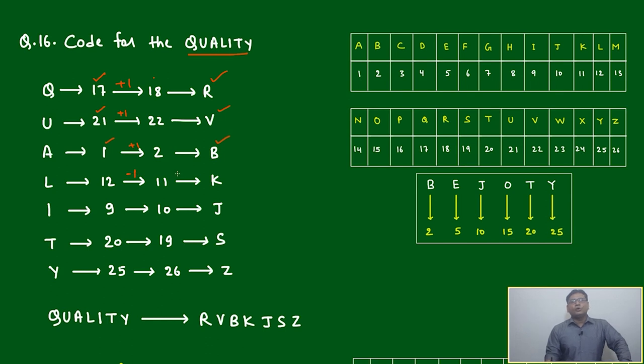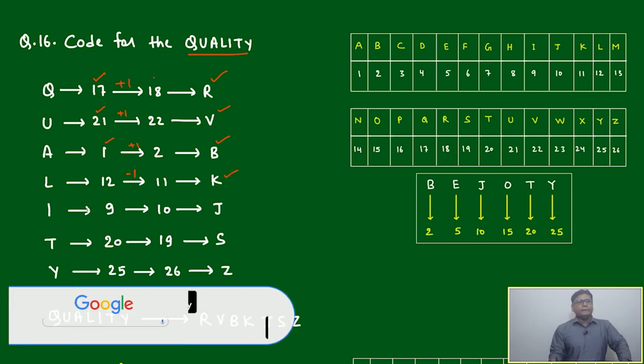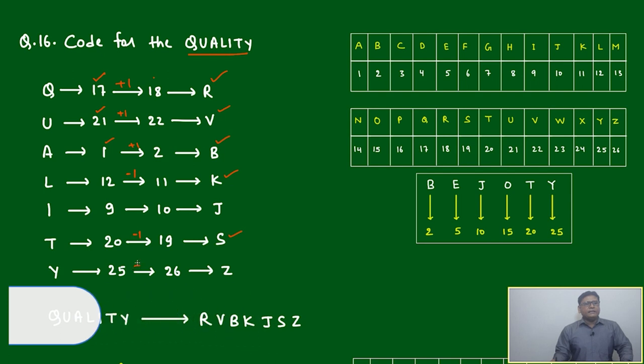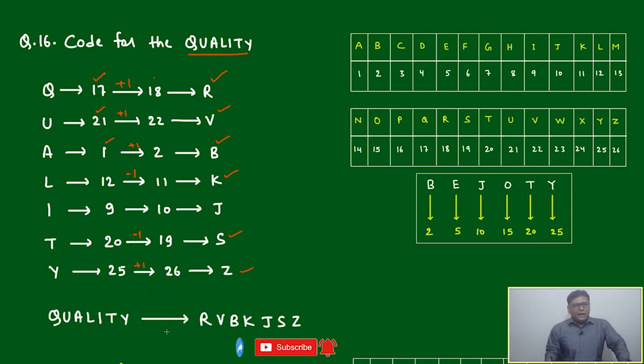I is 9, it is odd. Similarly, T is 20, it is even, it will be -1, it will be S. And Y, it is odd. QUALITY we can represent as R-V-B-K-J-S-W. We can't pronounce it, we have to just speak in broken way.